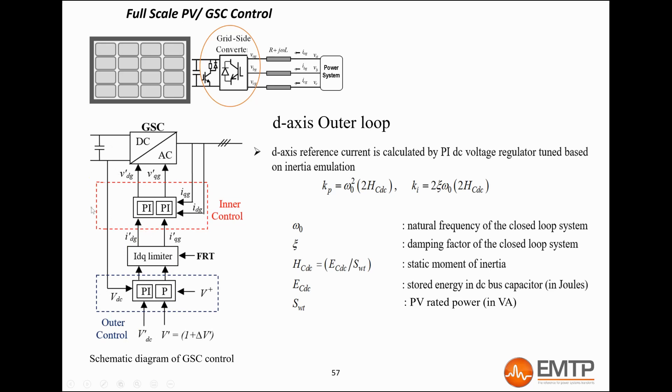The inner loop, which is the fastest one, produces the D-axis voltage reference to follow the current reference. Before being used by the inner loop, the current reference is limited by the IDQ limiter block, so the converter does not exceed its current capability, which could cause hardware damage. The limiter function will be explained later on in this presentation.